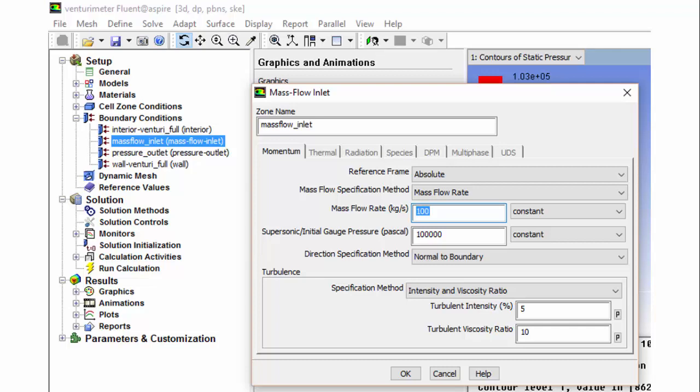I say, here it's your option to choose any value of flow rate. Finally, we need to check this value with the mass flow rate computed by the software. Here I have given 100 kilograms per second, which is quite high value. You can try with low values of mass flow rate.